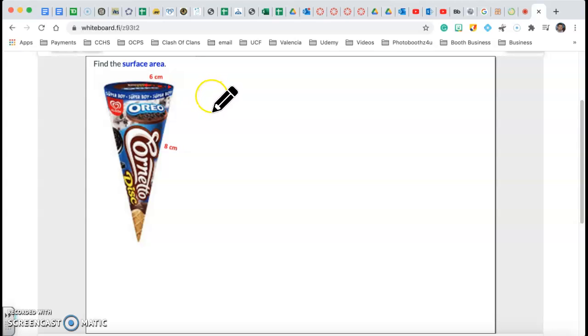Hi guys, this is Misty Rego. We're going to find the surface area of this ice cream cone. Surface area all around it including the top. It's like how much paper they use to cover the whole ice cream cone.